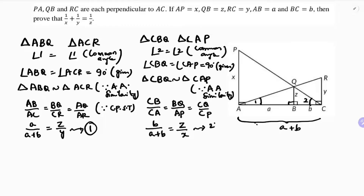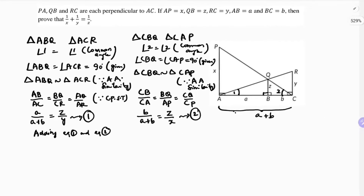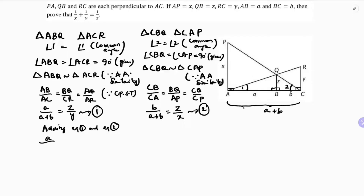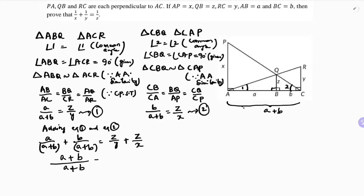Now I'll add equation one and equation two. Adding them: a/(a+b) + b/(a+b) = z/y + z/x. The LCM on the left is (a+b), so the numerators add to give (a+b)/(a+b) = 1. On the right, taking z common: z(1/x + 1/y). So 1 = z(1/x + 1/y), which means 1/z = 1/x + 1/y.